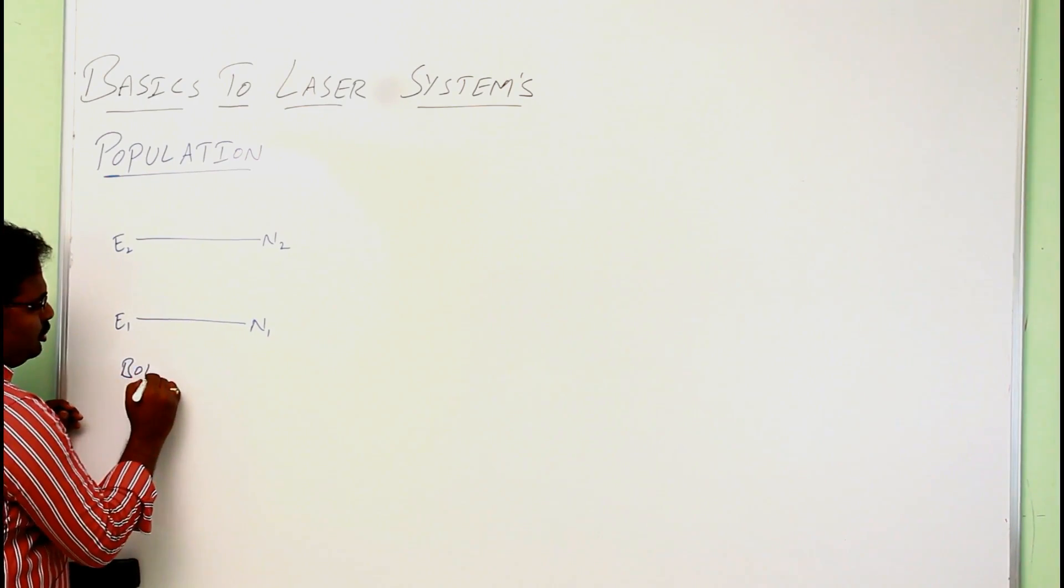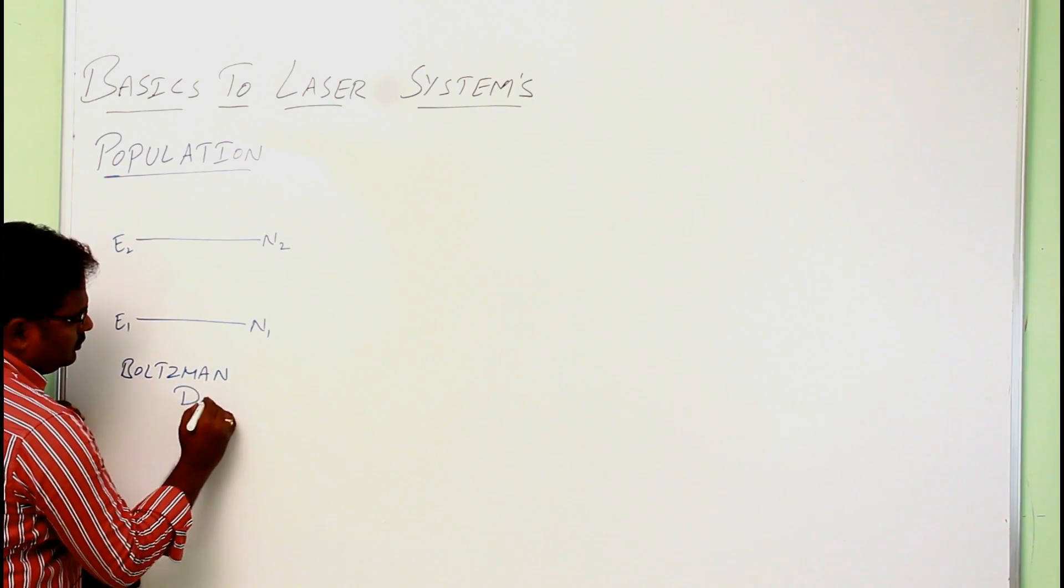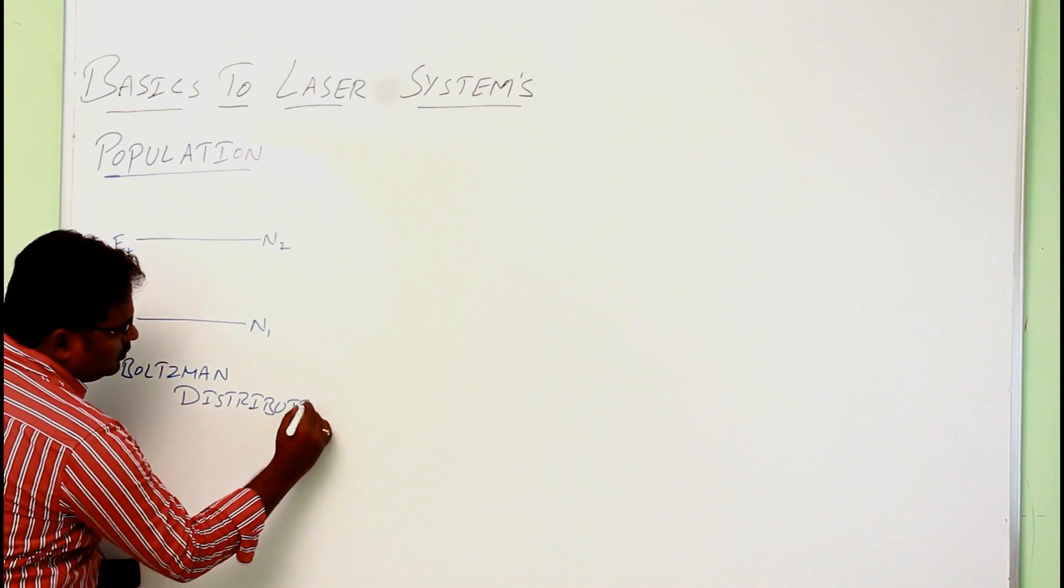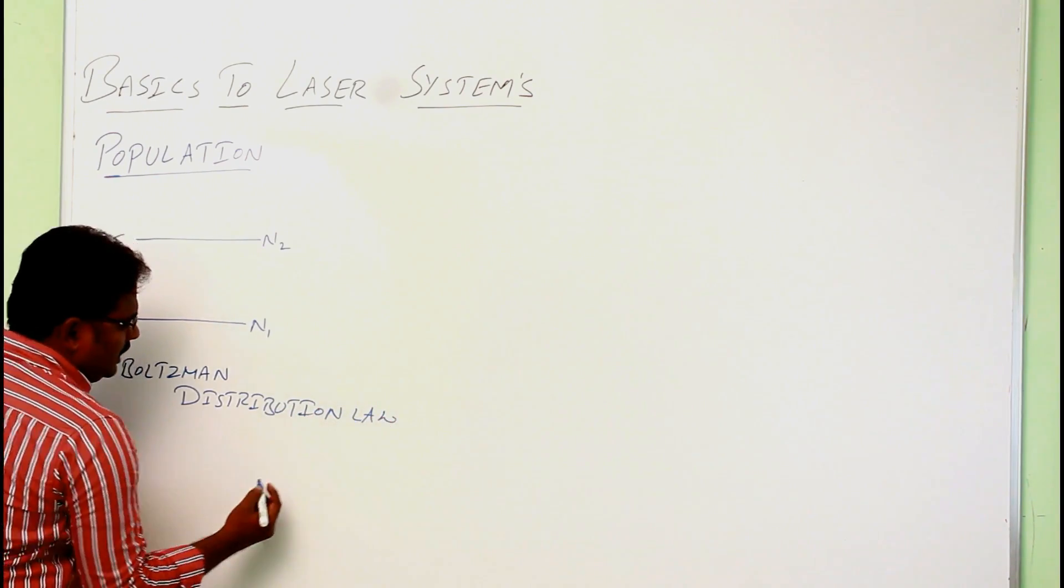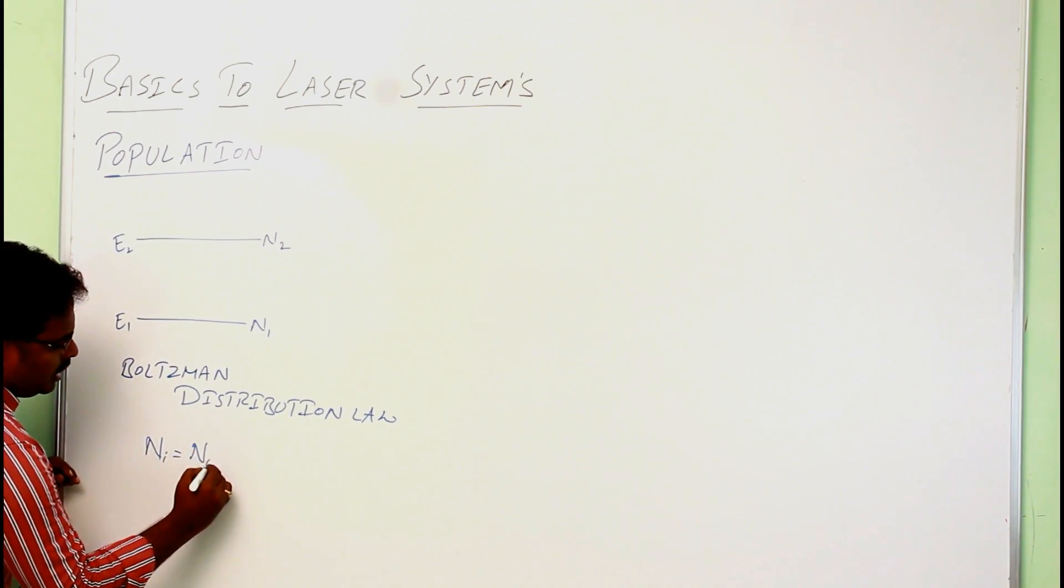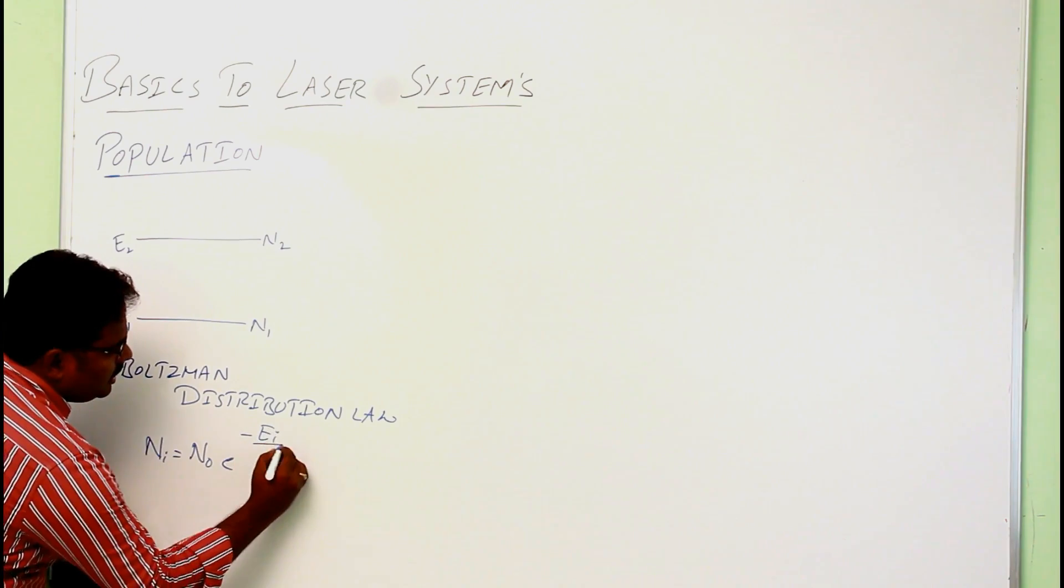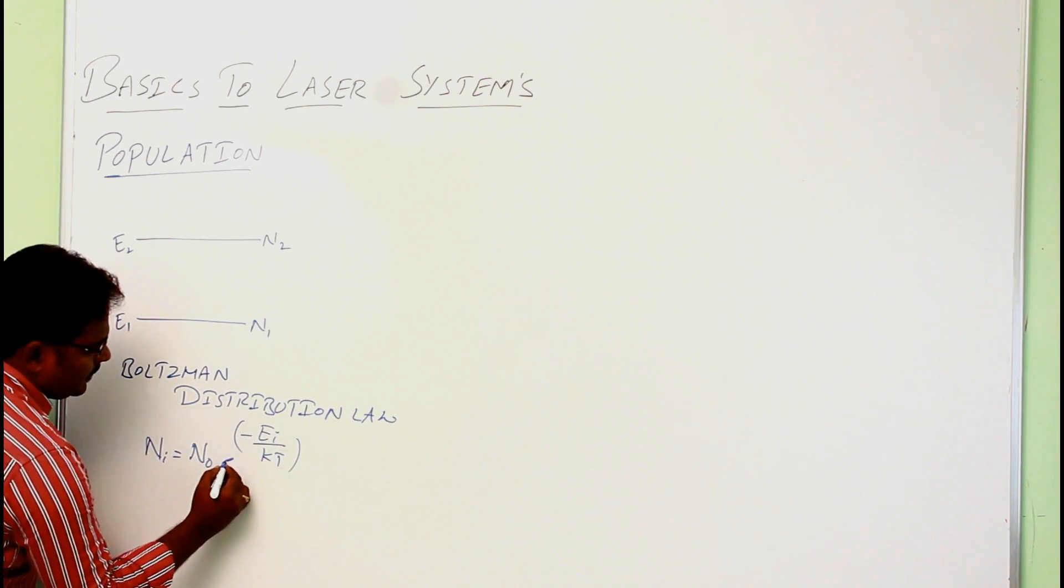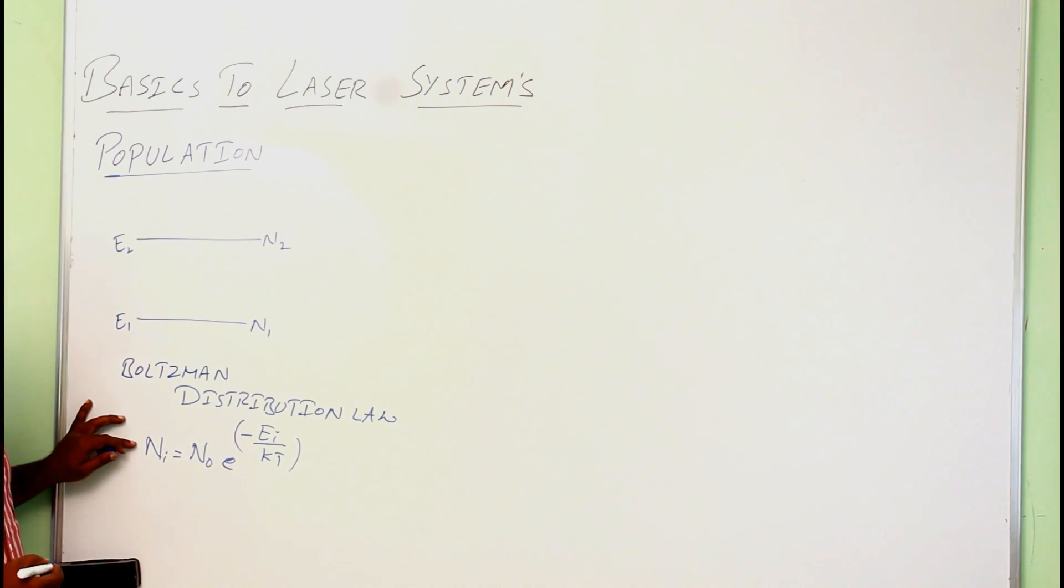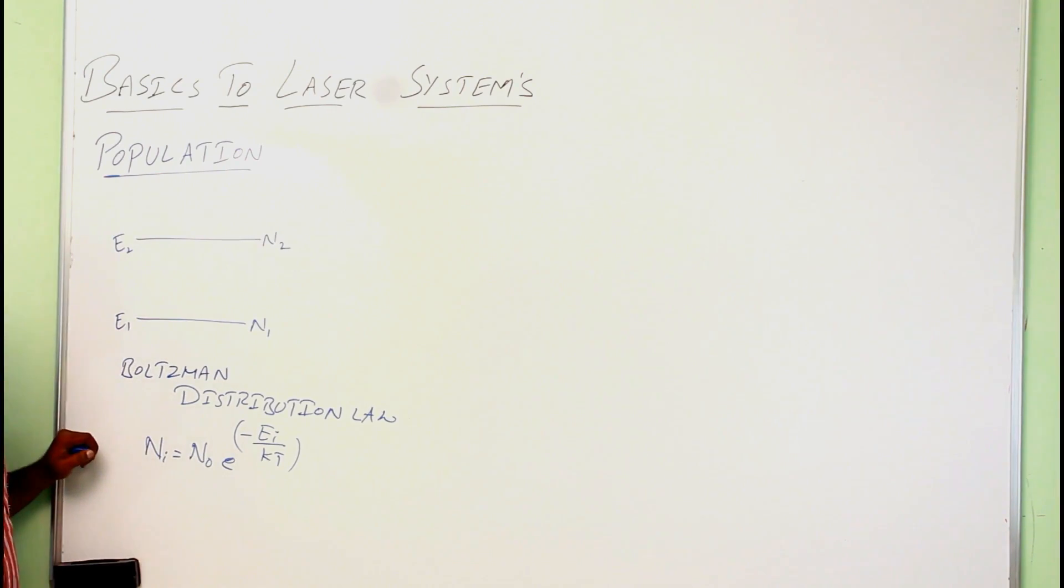It can be written as Ni equals N0 into e power minus Ei by KT, where Ni is the number of atoms present in that level, E is the energy of that particular level. Suppose if you want to calculate the number of available atoms present in excited state, nothing but in E2 level, consider i as 2.